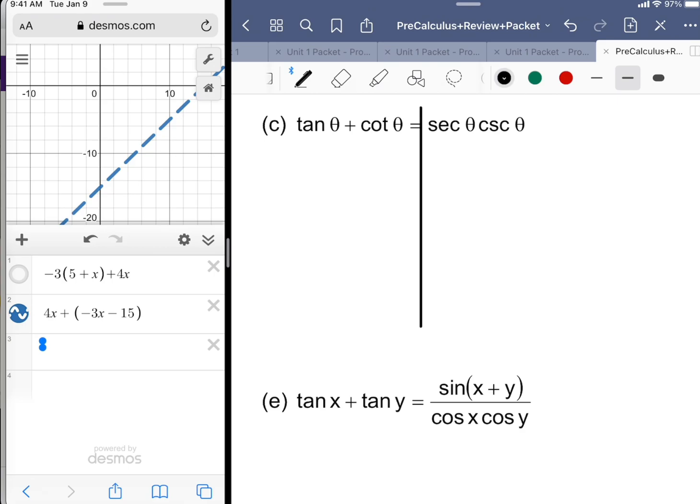We're looking for transformations or substitutions that allow us to convert from one form of an expression to another. We see tangent of theta plus cotangent of theta. We need to make that into secant theta cosecant theta.